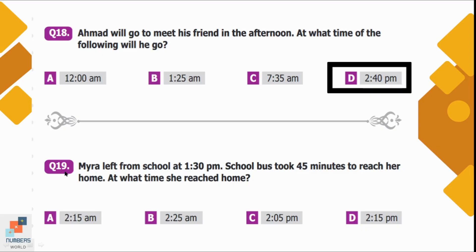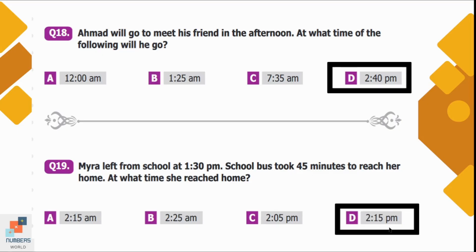Question number 19: Myra left from school at 1:30 PM. The school bus took 45 minutes to reach her home. At what time did she reach home? 1:30 PM plus 45 minutes gives 2:15 PM. Option D is the correct option.